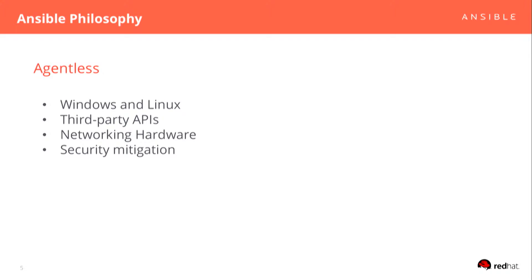It also means that things you can't SSH into and don't have full access to are easy to bring under the Ansible umbrella — third-party APIs, cloud vendors, appliances in your data center, networking hardware like Cisco or Juniper switches and routers. You can make that repeatable instead of hand-configuring every artisanal switch config. For security mitigation, you can use Ansible to orchestrate rolling restarts — if you have a Heartbleed-like situation, write two Ansible tasks and have it find all vulnerable machines and patch them.